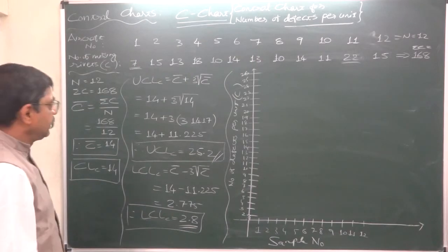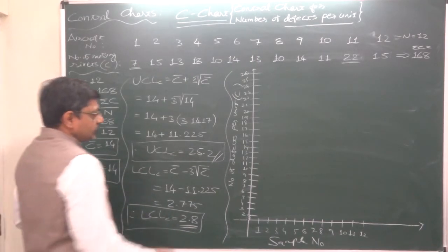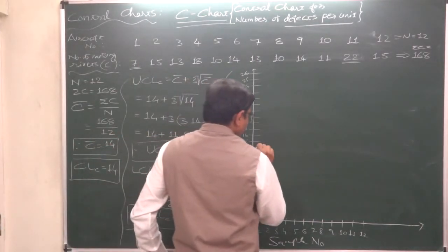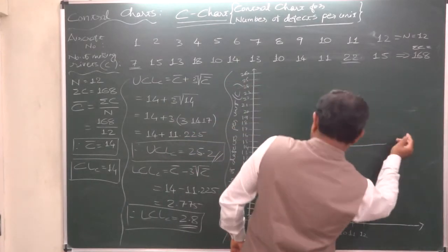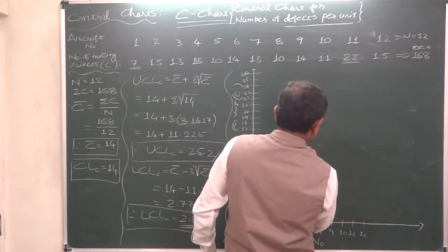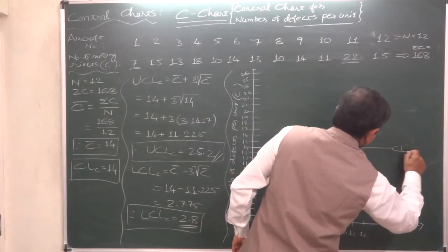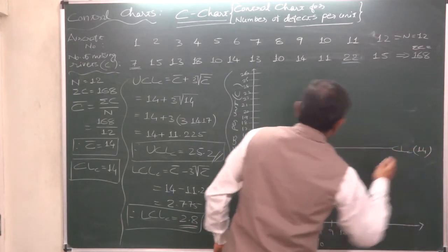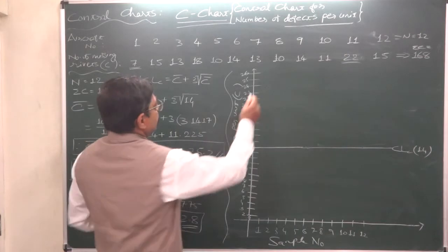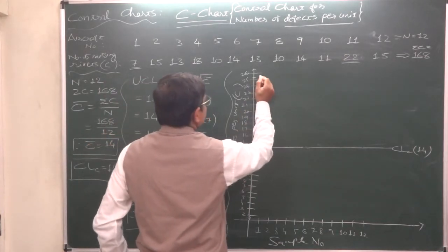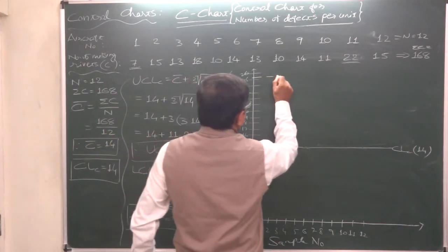First of all, three lines of three control limits. Central line first of all is 14, and it is drawn as continuous line always. Central line here it is 14.